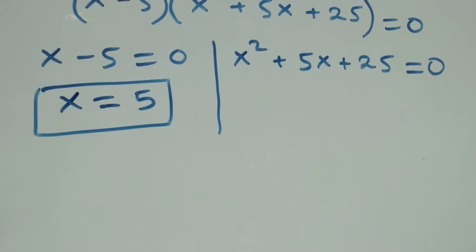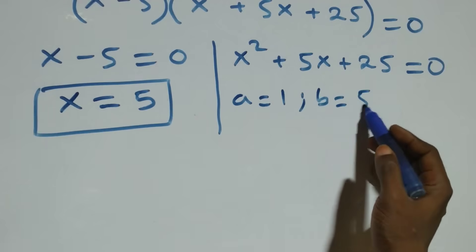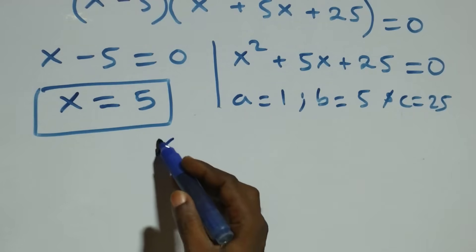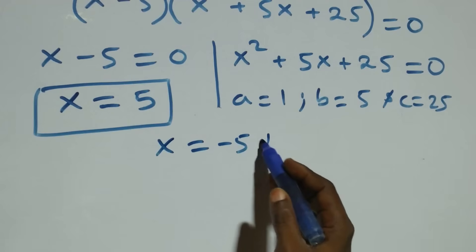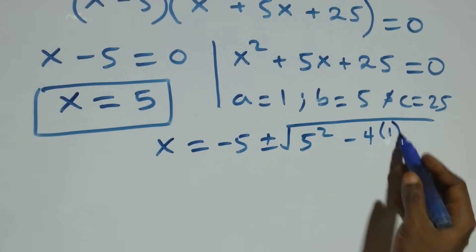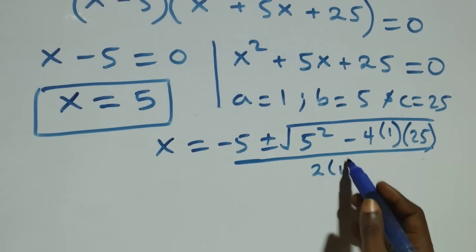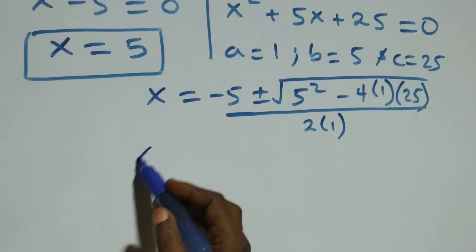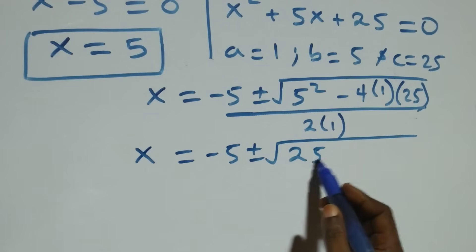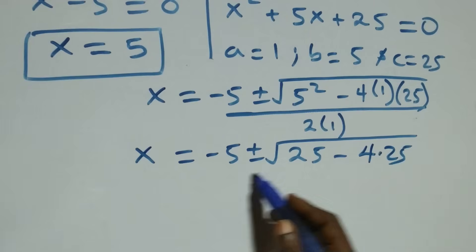For the quadratic equation x squared plus 5x plus 25 equals 0, we have a equals to 1, b equals to 5, and c equals to 25. Applying the quadratic formula: x equals to minus 5, plus or minus square root of 5 squared minus 4 times 1 times 25, all over 2 times 1. Simplifying: minus 4 times 25 gives us the expression under the square root.